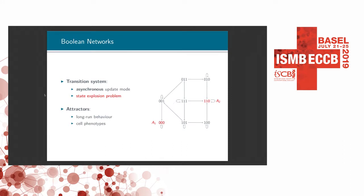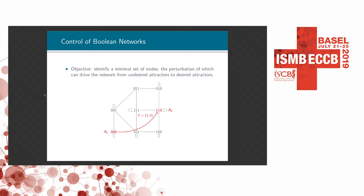The long-run behavior of a Boolean network is represented as attractors. Attractors are hypothesized to characterize cell phenotypes. For this toy example, there are two attractors, A1 and A2. The system will eventually settle down to one of the attractors, and once it reaches one, it can never escape unless perturbed externally. Unlike the control of social networks, the control of biological networks focuses only on attractors. Our goal is to identify a minimal set of nodes whose perturbation can drive the system from undesired unhealthy attractors to desired healthy attractors.